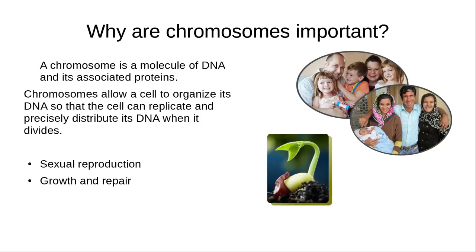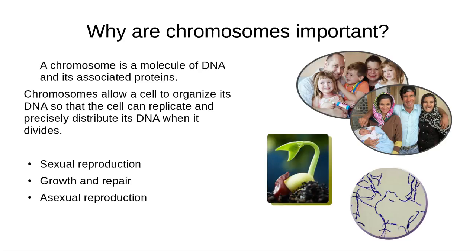Multicellular organisms grow through the process of cell division, like this seedling, which started out as a fertilized egg. Single-cell organisms, such as these bacteria, reproduce by cell division. As a cell divides, it must copy its DNA and then divide it such that the two resulting cells receive the correct amount of genetic information. Cells can precisely divide their DNA because it is organized into chromosomes, so chromosome structure is important for cell division to occur correctly.